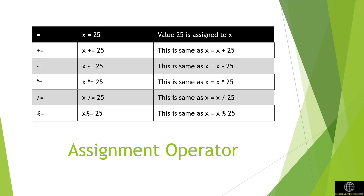Assignment operators are used to assign a value to a variable. The left side operand of the assignment operator is a variable and the right side operand is a value. This operator is used to assign the value on the right to the variable on the left.